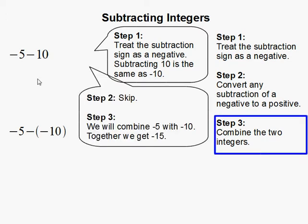Since we are not subtracting a negative number here, we can skip step 2 and move on to step 3. We will combine negative 5 with negative 10.